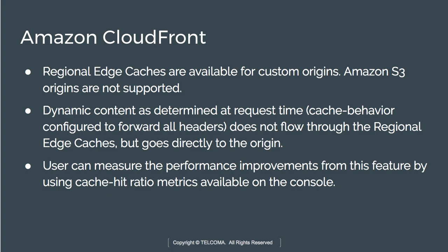Regional edge caches are available for custom origins; S3 origins are not supported. Dynamic content, determined at request time — such as cache behavior configured to forward all headers — does not flow through the regional edge cache. Instead, the request goes directly to the origin. Users can measure performance improvement through this feature.